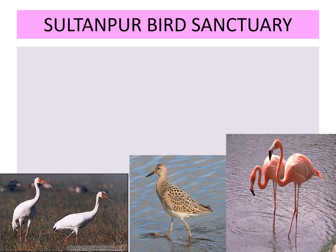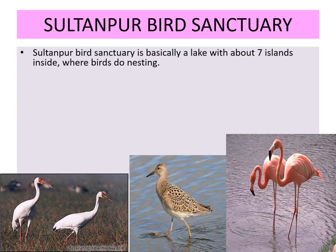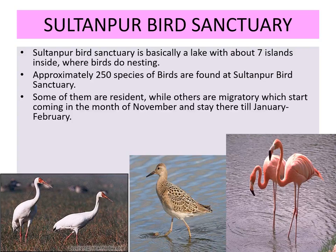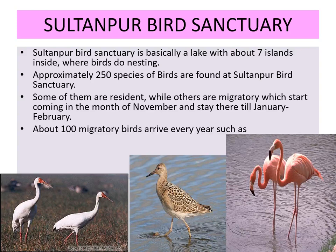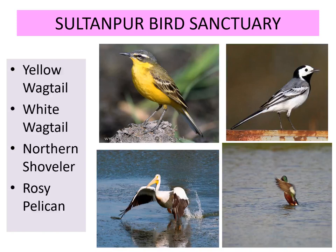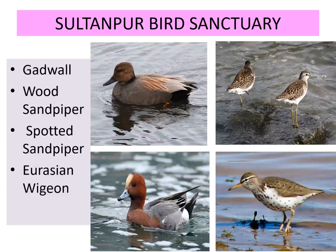Here are some pictures of migratory birds located in Sultanpur bird sanctuary. Sultanpur bird sanctuary is basically a lake with about seven islands inside where birds do nesting. About 250 bird species normally visit the sanctuary — some are resident while others are migratory, arriving in November and leaving in February. About 100 migratory birds arrive each year, including Siberian cranes, great flamingos, raptors, black-winged stilts, common teal, common greenshank, northern pintail, yellow wagtail, white wagtail, northern shoveler, rosy pelican, gadwall, wood sandpiper, spotted sandpiper, and Eurasian wigeon.